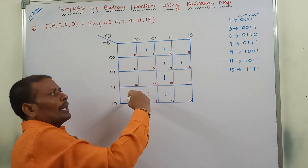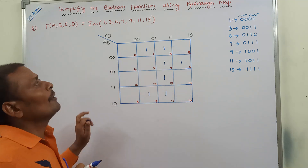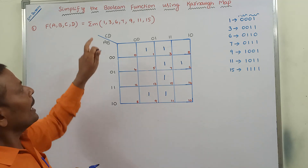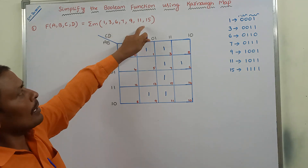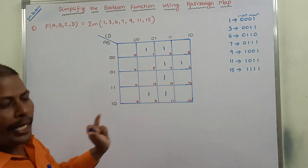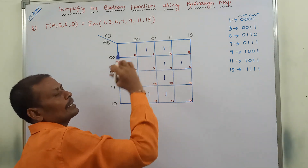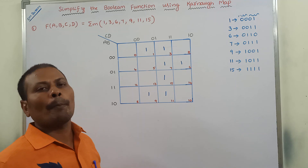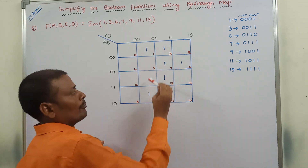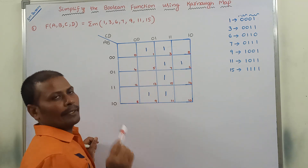We are placing 1s in the 4-variable Karnaugh map for the corresponding min terms. How many min terms are there? 7 min terms. Check whether 7 ones are placed in the Karnaugh map — here 4 ones, 5th, 6th, and 7th ones.